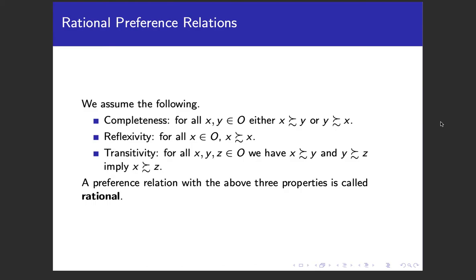There are three properties we want our preference relation to have. In MWG there are a couple exercises showing these imply similar properties for strict and indifference relations. The first is completeness: for all x and y in our set of outcomes, either x is weakly preferred to y or y is weakly preferred to x. This says that given any two things you're ranking, you need to be able to compare them — not necessarily saying one is better, but you must be able to compare them.